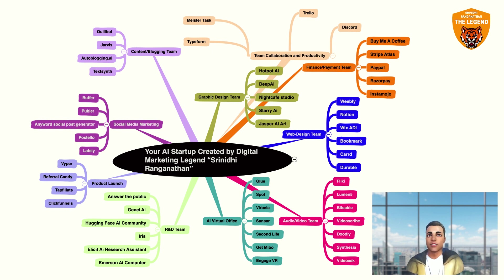The first one is you got to create your own AI-powered virtual office, and for that you can use Glue, Spot, Verbala, Sunsar, Second Life, GetMeBo, and EngageVR. You'll be able to use all this to create your own 3D or 2D virtual office that is set up on the web or software — your own office social network or virtual office space.